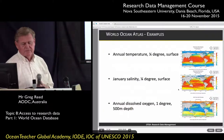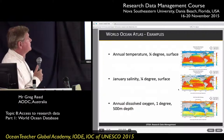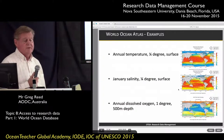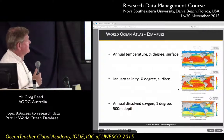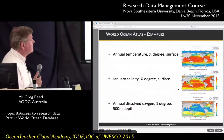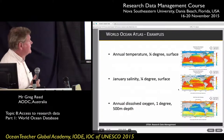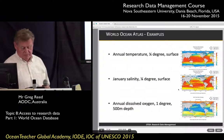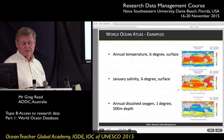Here are some examples from the World Ocean Atlas. You can have annual sea surface temperature at a quarter-degree grid — a gridded analysis. There's also January salinity at a quarter-degree surface, and you can also view standard depths. Another example is annual dissolved oxygen at one-degree resolution at 500 metres depth. Any of these different parameters can be selected from the World Ocean Atlas.